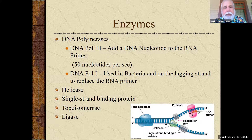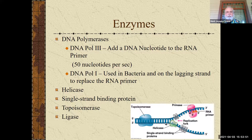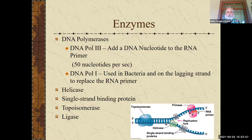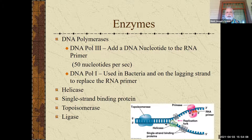Before any of that can happen, though, something has to happen to the molecule itself. Remember, it is a double helix and it will not replicate itself if it's all twisted. So helicase is the enzyme that is used to untwist it — helicase actually untwists the DNA molecule.